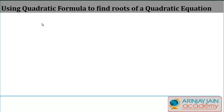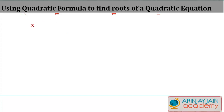In this video we are going to understand two things: one is how do you use a quadratic formula to find the roots of a quadratic equation, and then look at two examples of this. Now a standard quadratic equation is of the format ax squared plus bx plus c is equal to zero. We know that a quadratic equation can at best have two roots.